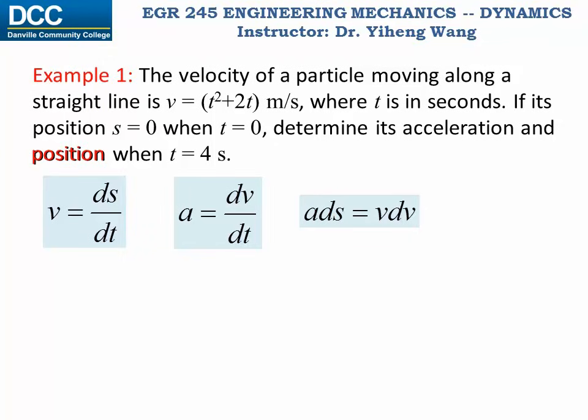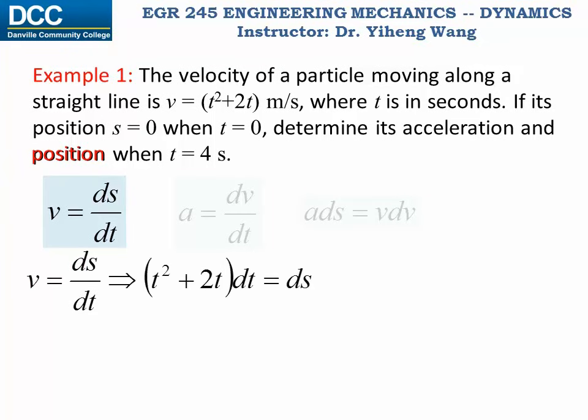in other words, we have the variables v, t, and s that we're interested in. So the equation that has all of these three variables is equation one. So we start with this equation, substitute v with the time function, and rearrange. Integrate both sides.